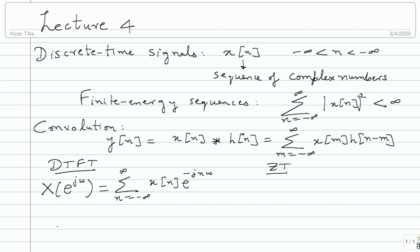Assuming convergence holds in a certain way, you also have an inverse relationship. x of n would be 1 over 2 pi times the integral from minus pi to pi of x of e power j omega times e power j n omega d omega. You might as well substitute this with any interval of length 2 pi. This is quite a fancy integral, and if you are not familiar with complex integrals, it can be misleading.